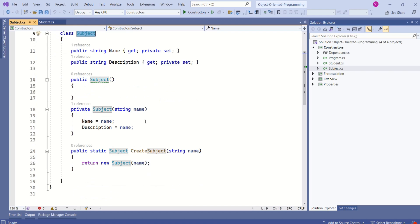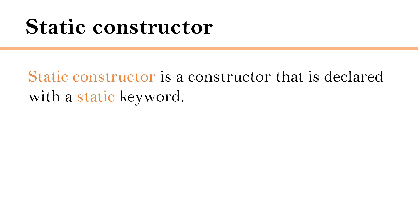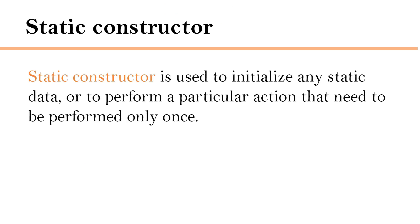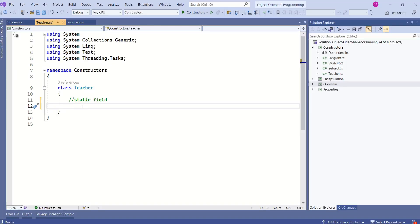C# has another type of constructor — a static constructor. A static constructor is a constructor declared with the static keyword. It is used to initialize any static data or to perform a particular action that needs to be performed only once. Let's write a small piece of code. We have a Teacher class.